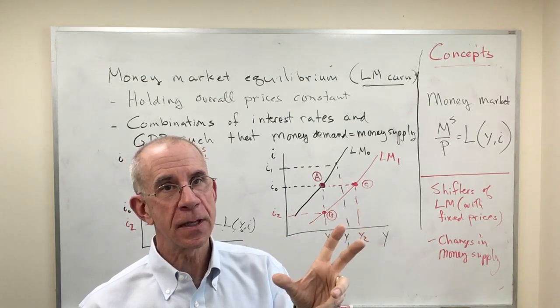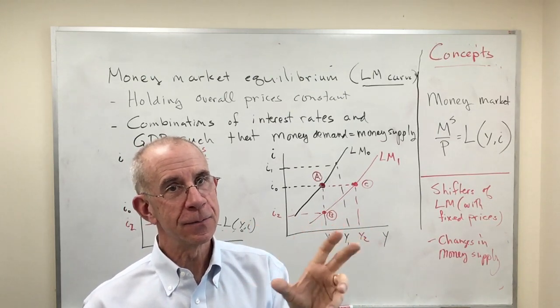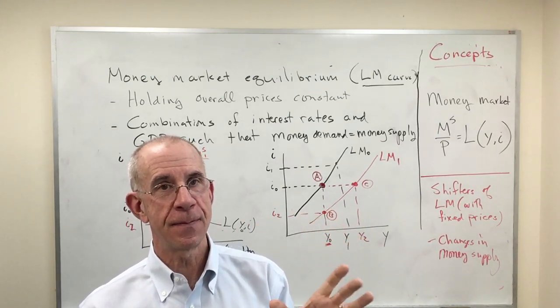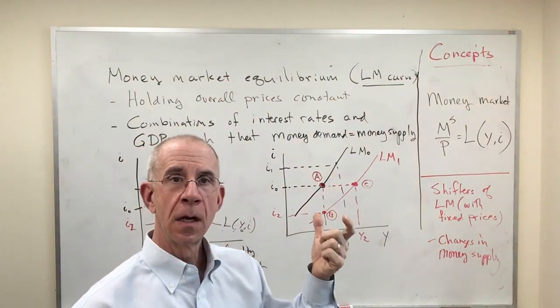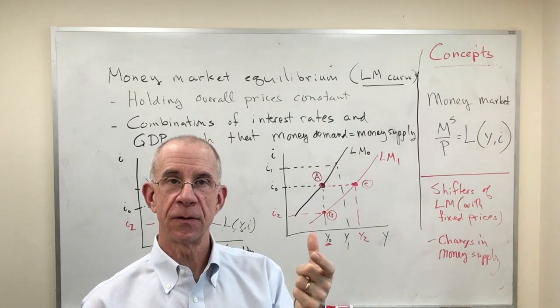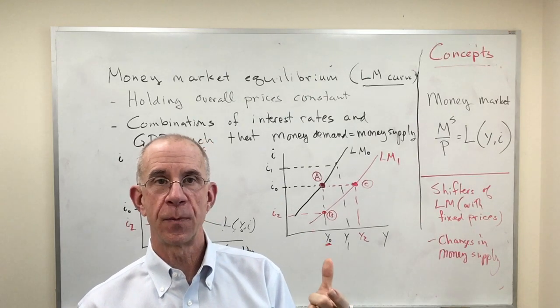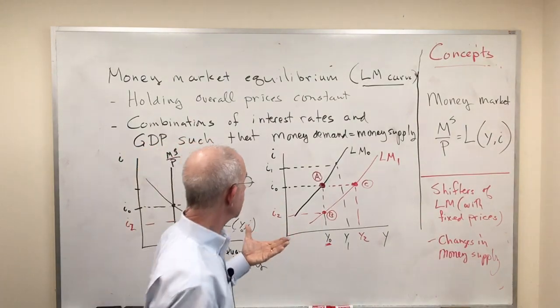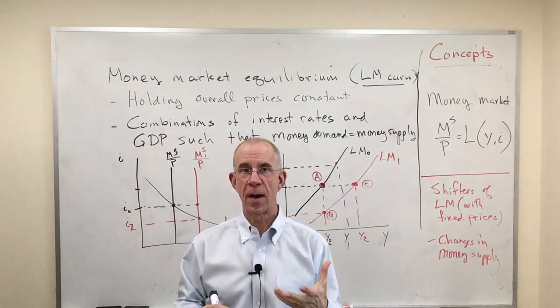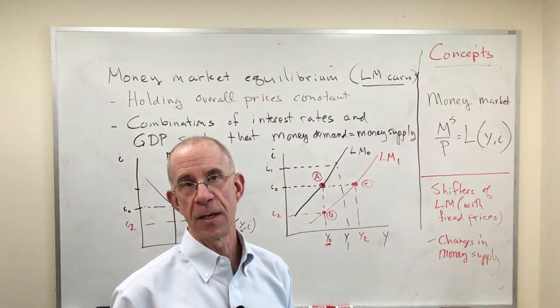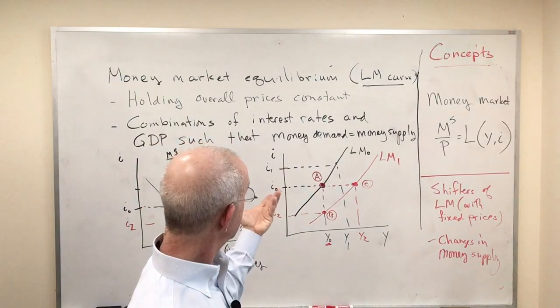This is a new set of equilibrium conditions with interest rates and output with an increase in supply of money. Now this may seem like a distinction without a difference, but it's important that you keep that straight. The whole series of combinations of equilibrium outcomes changes fundamentally when the LM curve shifts to the right because of the change in the money supply.